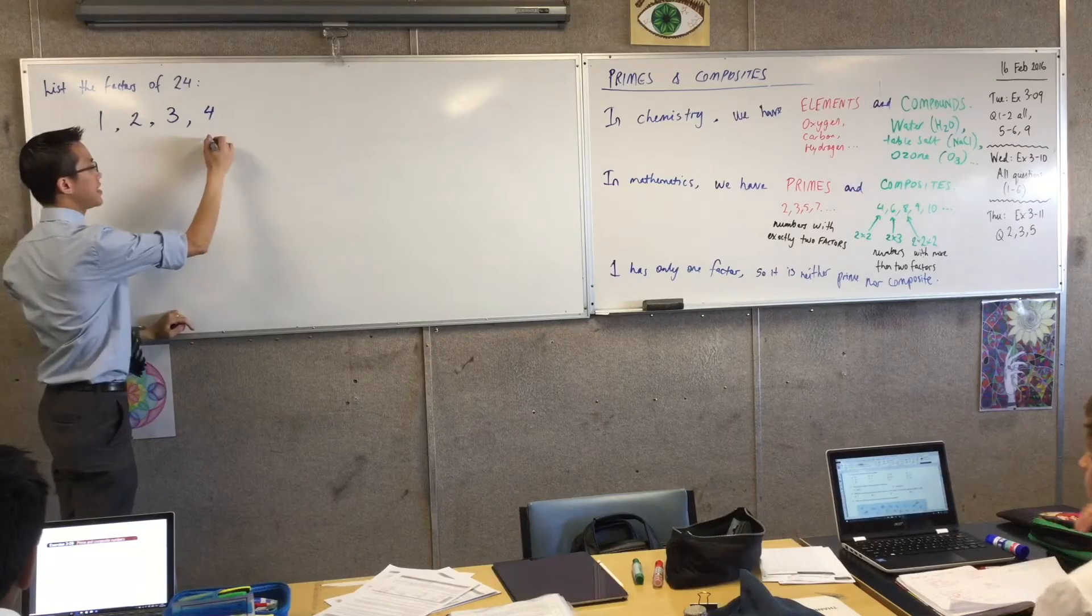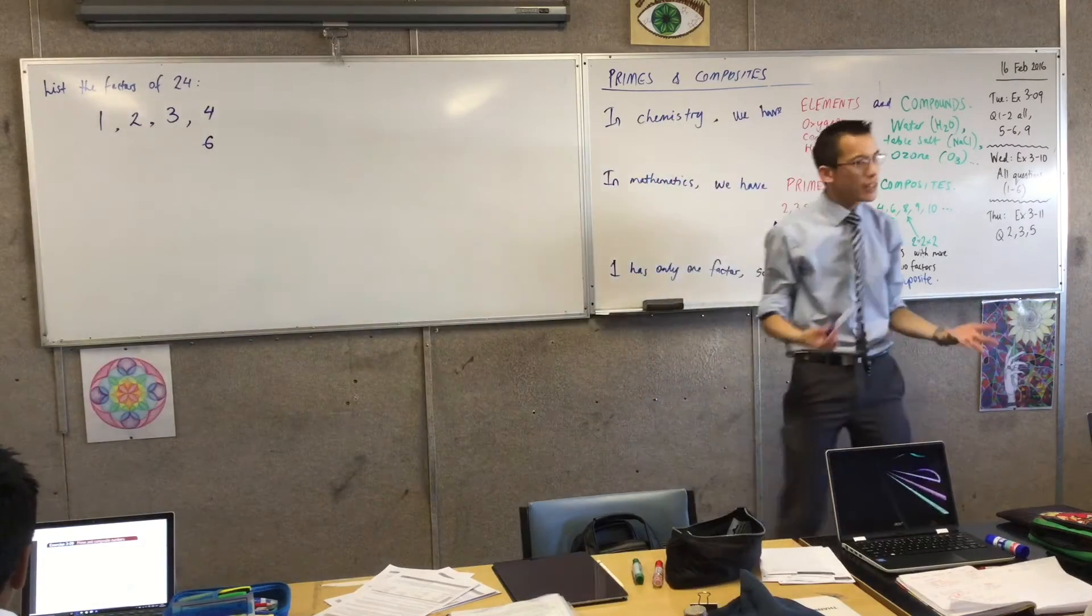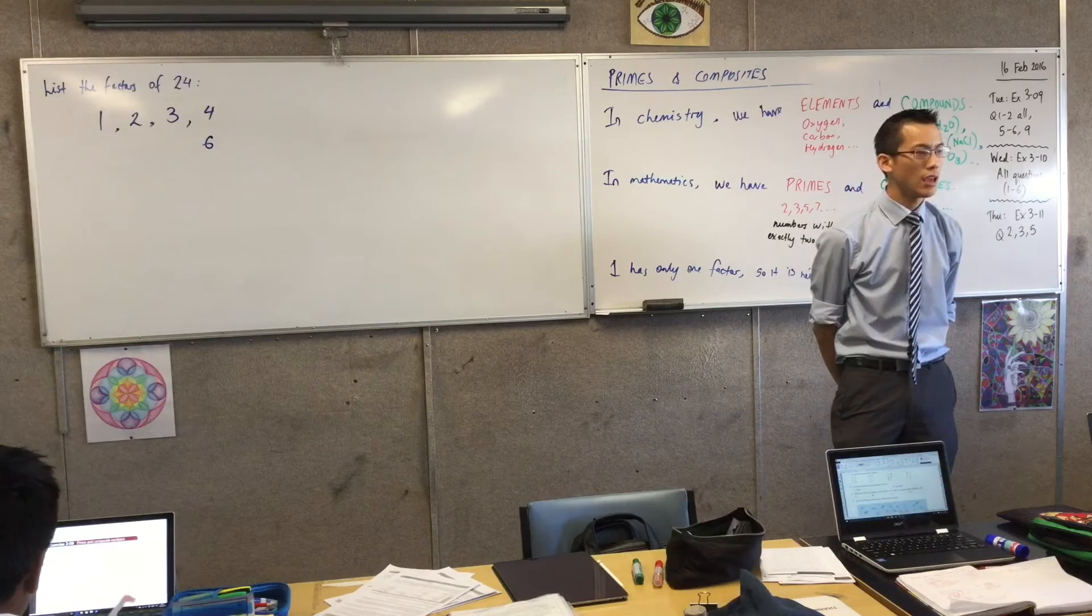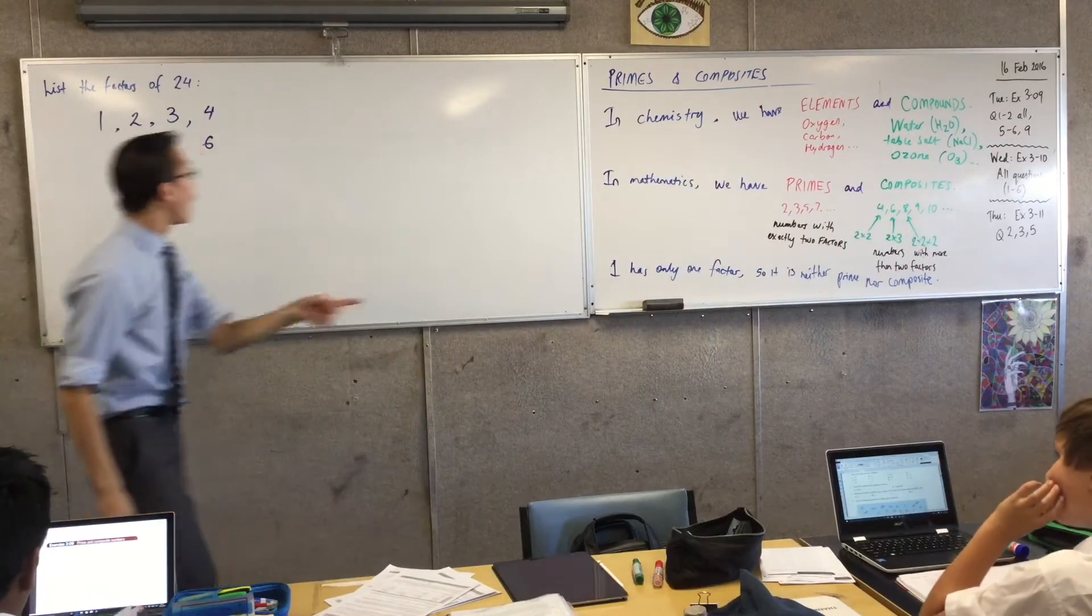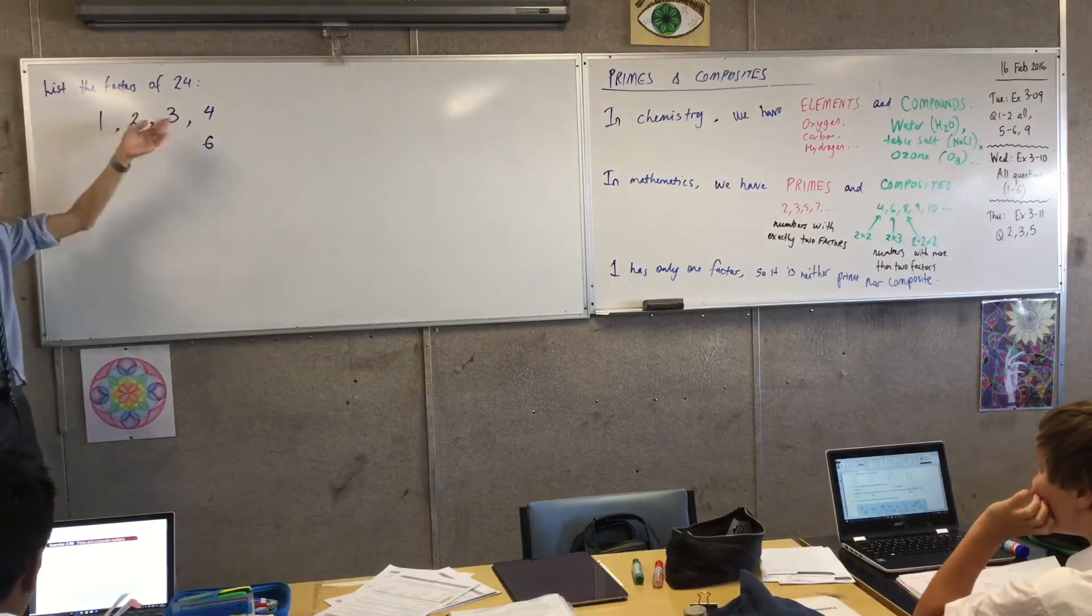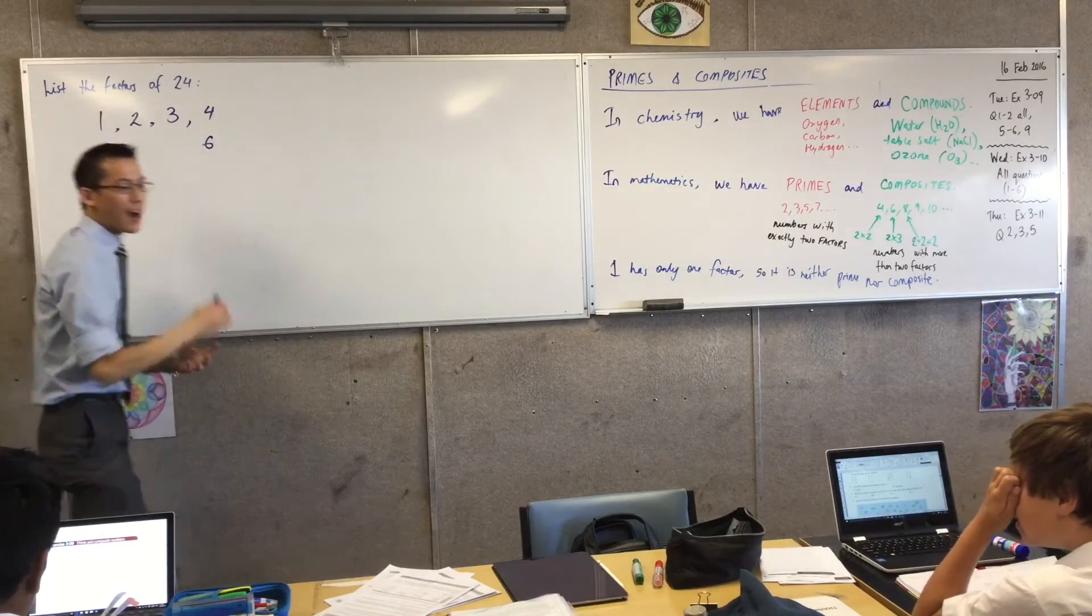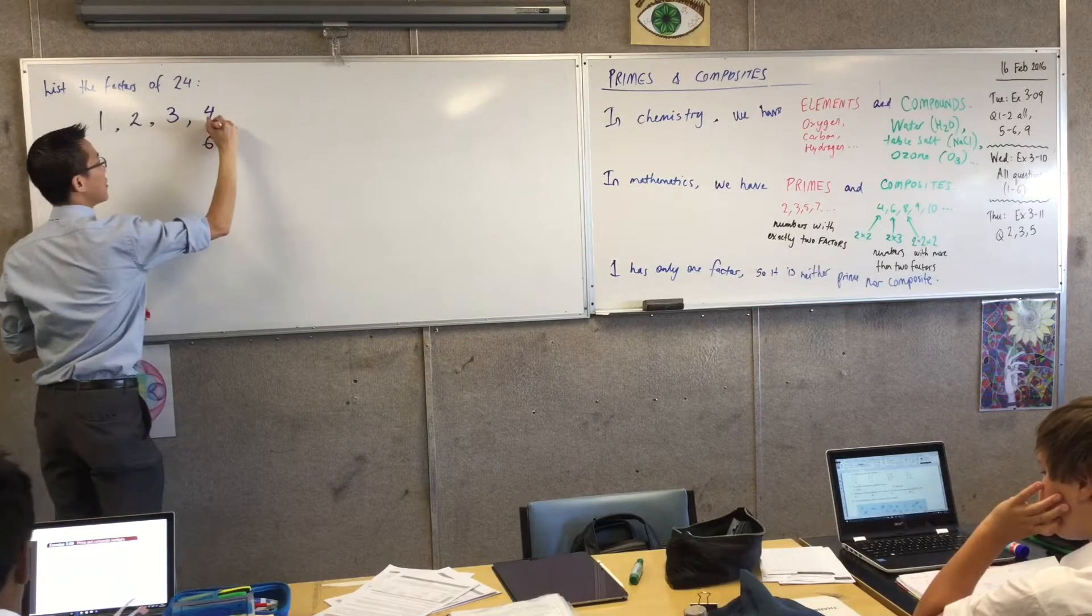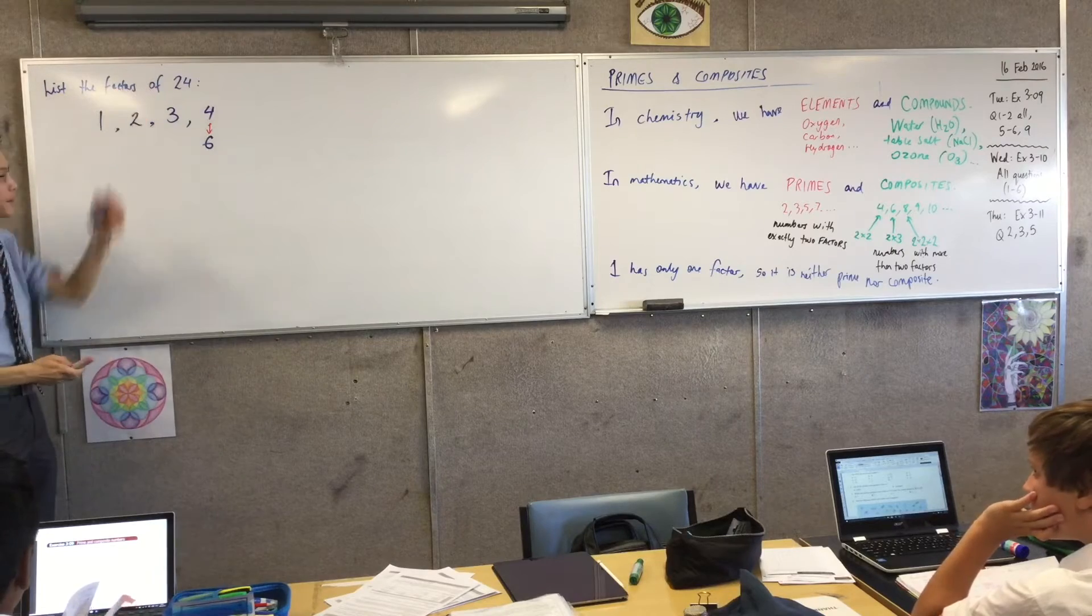I'm going to write 6 here instead of continuing on. And the reason why I write 6 there is because what is 24 divided by 6? It's 4, isn't it? It's 4, and 4 is a number that's already on my list. Do you see that? I already knew that. So what happens is that 4 and 6 are, in fact, matched up together. They're a pair. Every factor has a pair in a number.